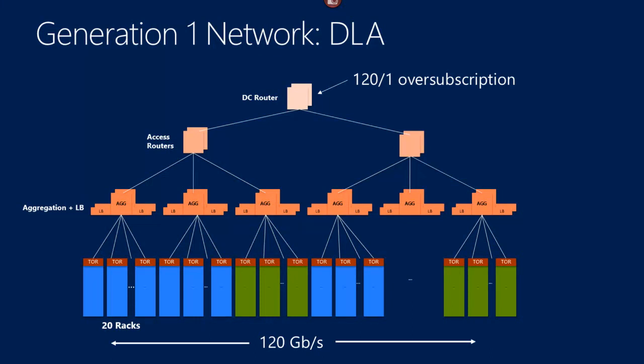The problem with this architecture is at the top it's 120-to-1 over-subscription. If you're going from a server on the far right to a server on the far left, the traffic goes all the way up to the DCR and back down. That DCR becomes a bottleneck — 120-to-1 over-subscription, meaning the bandwidth that can come up to the DCR is 120 times what can go out. We also had only about 120 gigabits per second bandwidth east-to-west. Really limited.